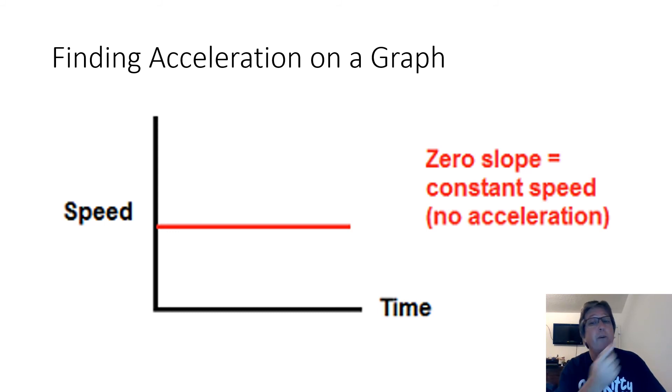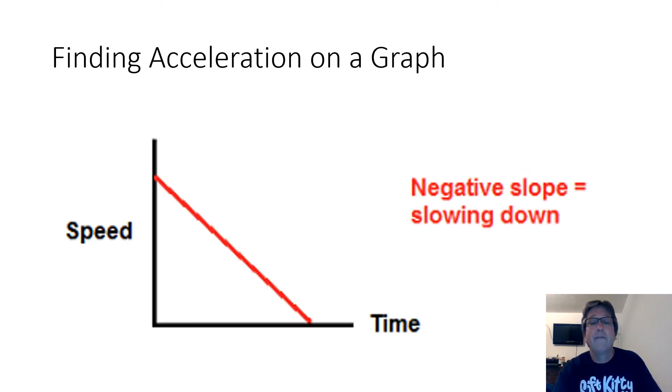This is different from last week. When we talked about distance versus time graphs, that flat line meant no speed, which meant sitting still. This graph is a speed time graph. The object's not sitting still. It's just not accelerating. It's staying at a steady speed. And finally, what about that negative slope? Well, if the slope is negative, acceleration is negative. And we know that means slowing down.